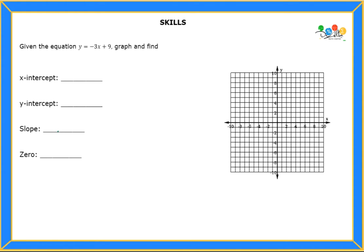Hello students. Let's read the problem. It says, given the equation y equals negative 3x plus 9, graph and find x-intercept, y-intercept, slope, and zero.